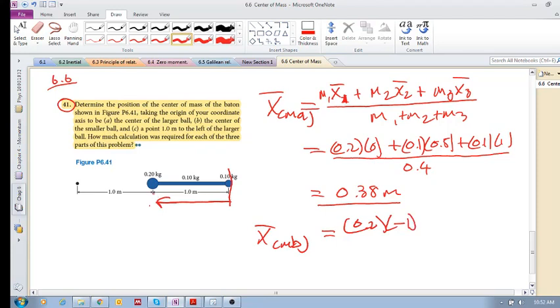Minus 1, plus 0.1. This is 0.1 kilograms times minus 0.5, plus 0.1 times 0. Because this position is 0, divided by 0.4.